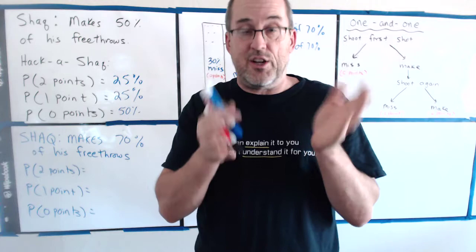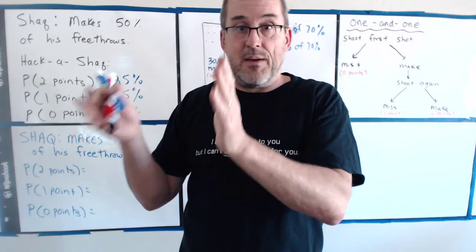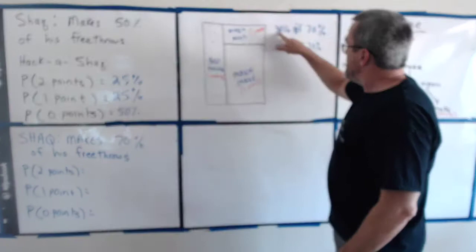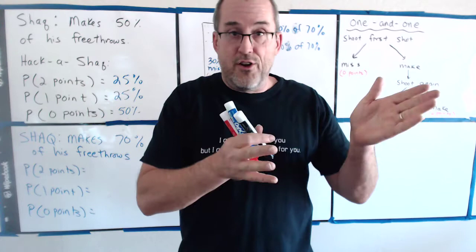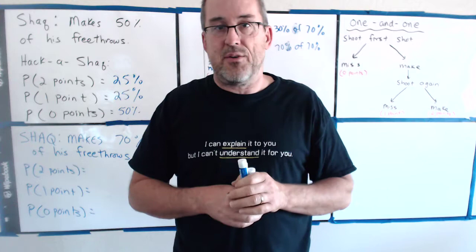So out of 100 tries, 70 of them, he made the first shot. Now, of those 70, 30% of the time he misses the second shot. Alright. So, 30%. Here's a good way to think about this. So, of the 70 per 100, 30 of those, okay, 30% is 10% three times. Why am I saying 10%? Because 10% is easy to think about.